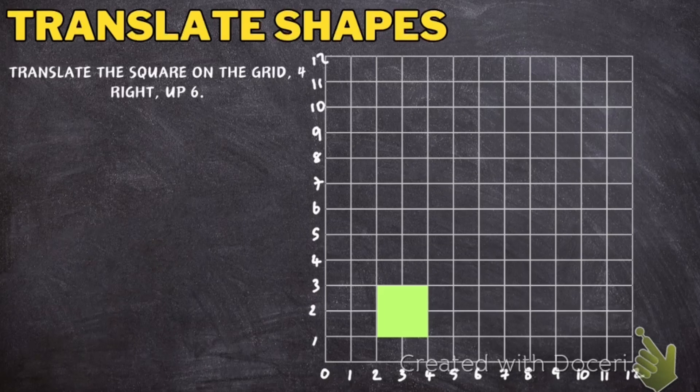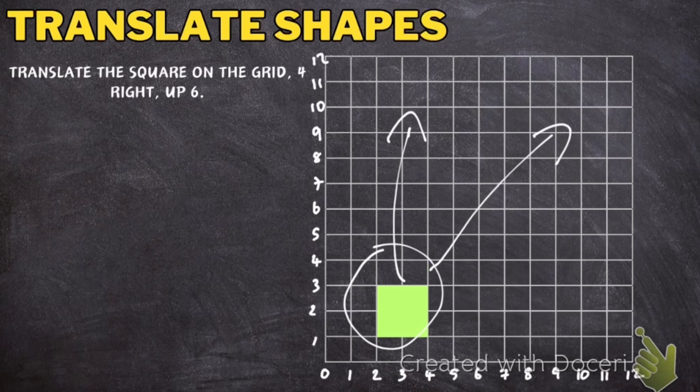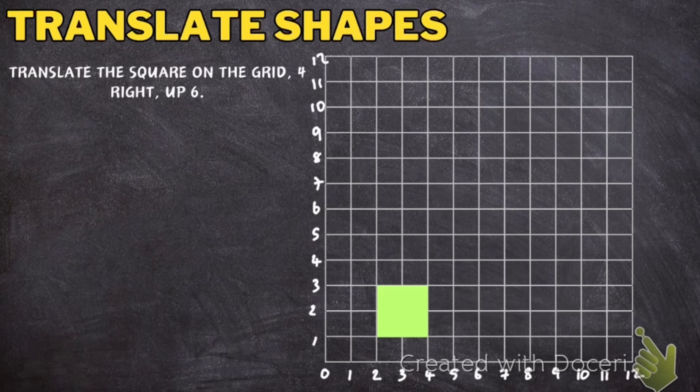What is translating shapes? Translating shapes is when we have a shape on a coordinate grid and we move it from one place to another without changing its shape or its size. So this square here we're going to move it somewhere else but we're not going to change its shape or its size. We're not going to rotate it or anything like that.